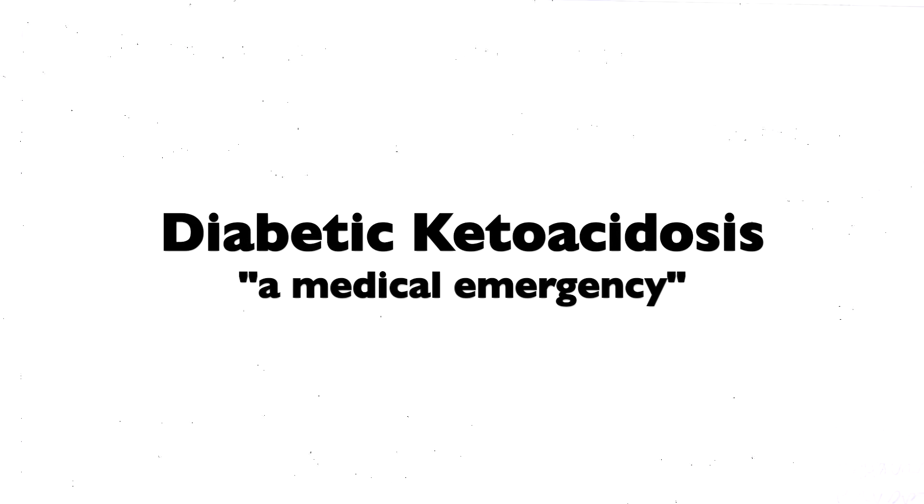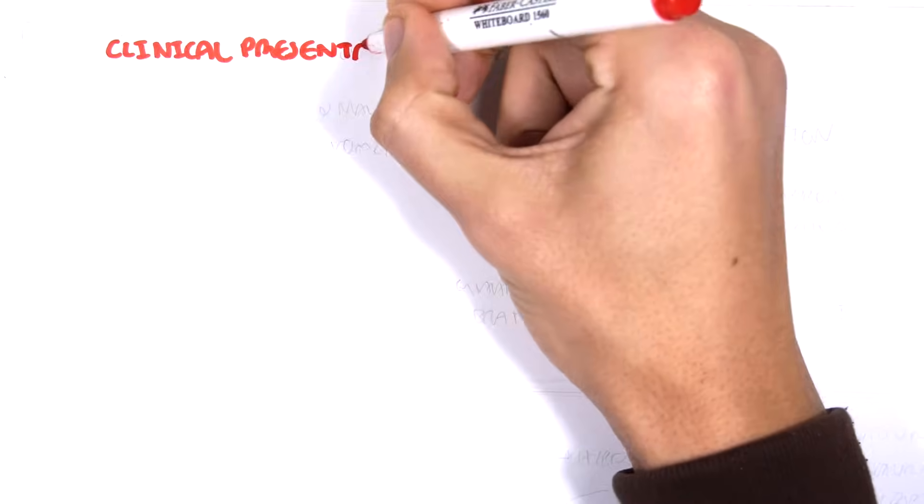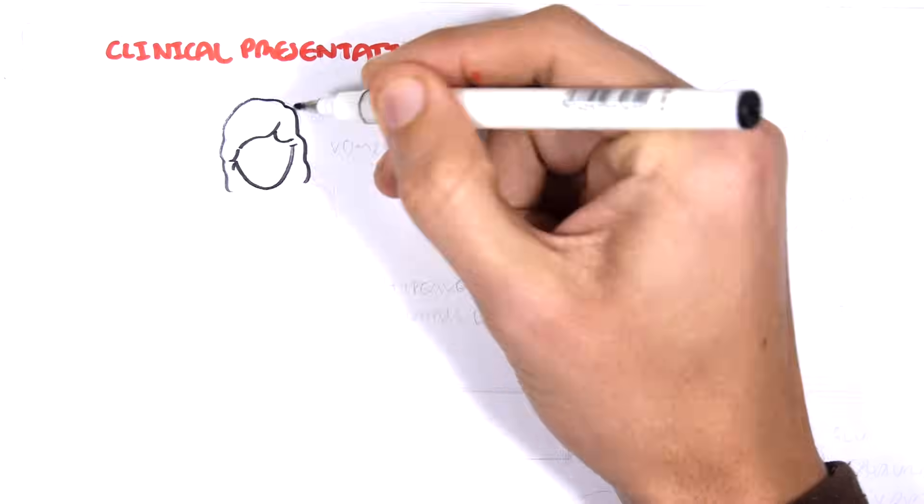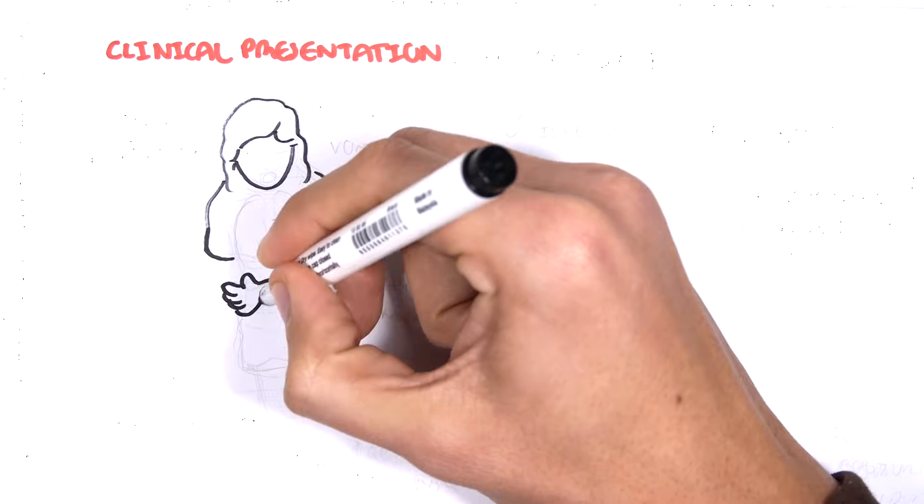It is important to know that diabetic ketoacidosis is a medical emergency, especially in type 1 diabetic patients. But it is known that it can also occur in type 2 diabetes.